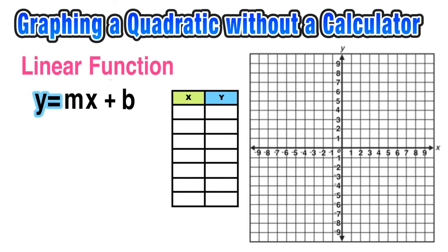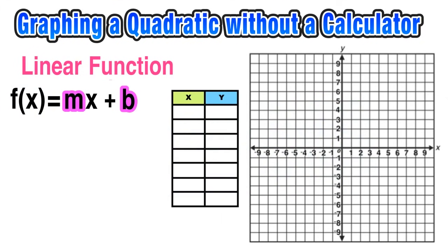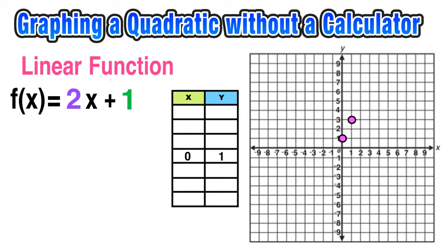If we call it a linear function instead of y equals, we would have f of x equals. It's super important that you understand that f of x and y mean the same thing — they both represent the output. If I wanted to graph a linear function, let's look at f of x equals 2x plus 1. I'll start at the y-intercept of positive 1 and put a point there; the coordinates of that point are (0, 1). Then I can use the slope of positive 2 over 1, rise over run.